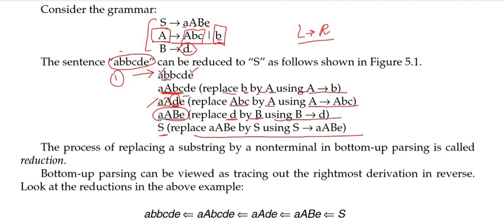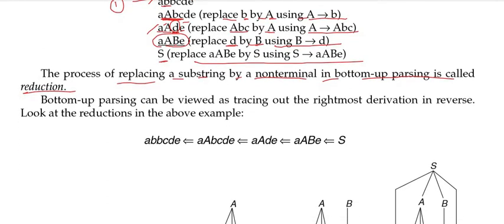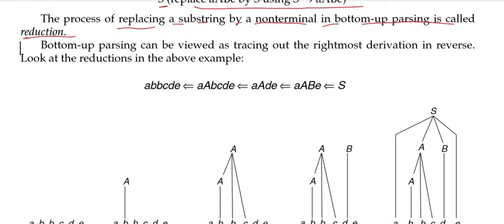So in bottom up parsing, we take the string and keep reducing it backwards until we reach the start symbol. The process of replacing a substring by a non-terminal in bottom up parsing is called reduction. In top down parsing, the reverse process starting from the start symbol is called expansion, but in most books this term is not specifically mentioned for top down parsing.